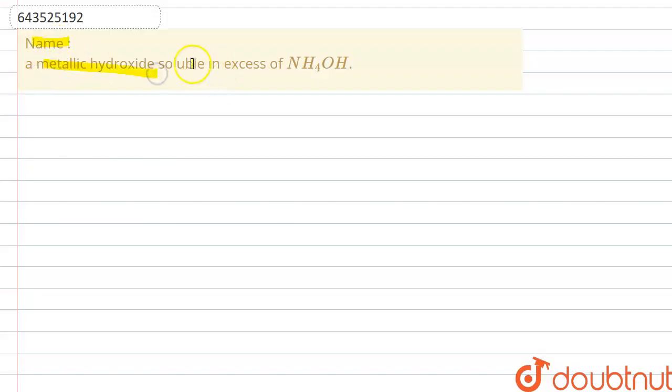a metallic hydroxide soluble in excess of NH4OH. So in this question they are asking us to name a metallic hydroxide that is soluble in excess of ammonium hydroxide solution. Such metallic hydroxide that is soluble in excess of NH4OH is copper hydroxide.